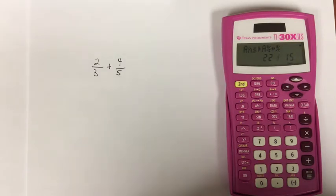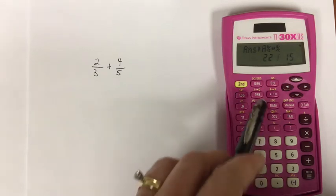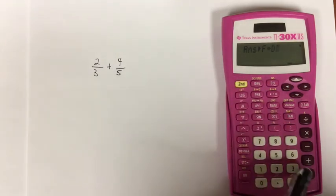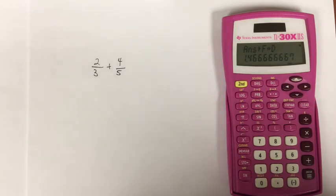On the other hand, if you have the improper fraction and you wish you were back in decimal form, you can convert back to decimal form the same way. Second F to D equals, and now we're back in decimal form.